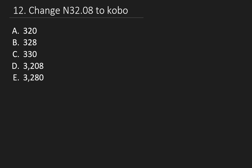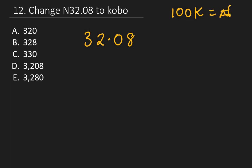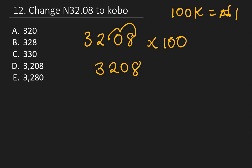Question 12: Change 32.08 Naira to kobo. 100 kobo equals 1 Naira, so to change to kobo, multiply by 100. Moving the decimal point two places gives 3,208. The right answer is D: 3,208 kobo.